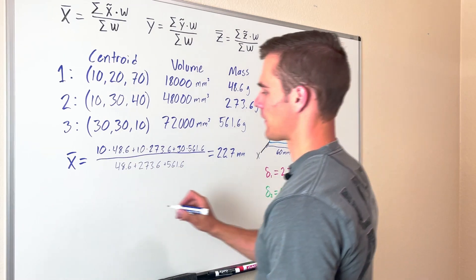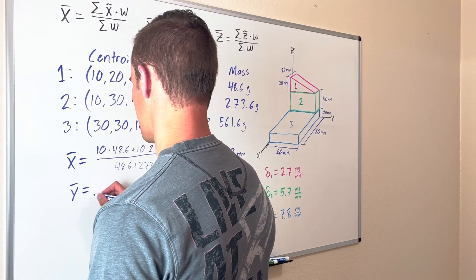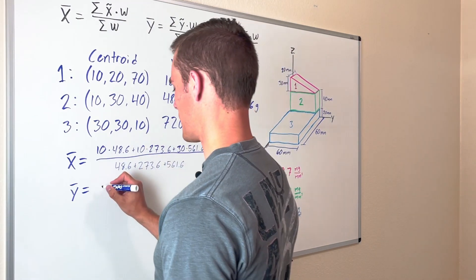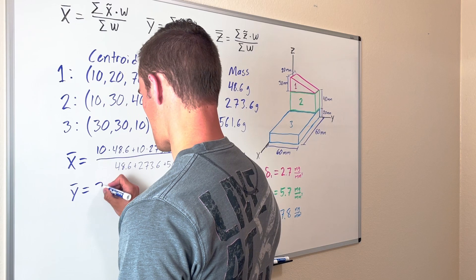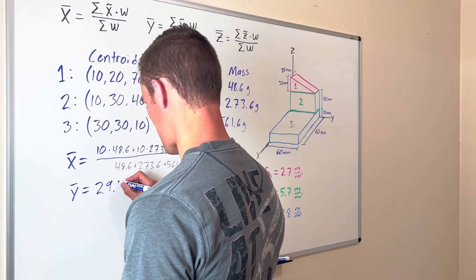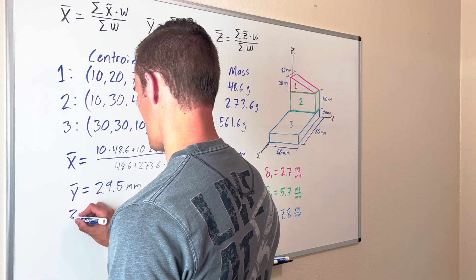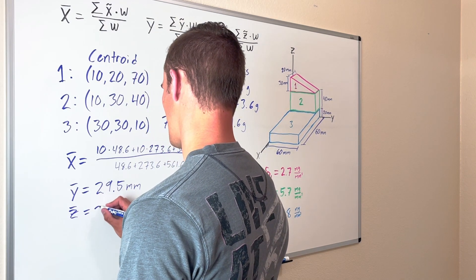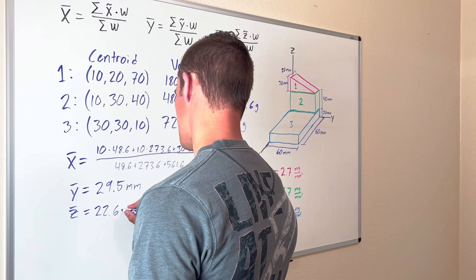Finding Y-bar and Z-bar is the exact same process. When you plug those into your calculator, you get Y-bar equal to 29.5 millimeters and Z-bar equal to 22.6 millimeters.